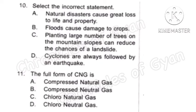Question 10: Select the incorrect statement. Option A — Natural disasters cause great loss to life and property — is correct, as earthquakes and cyclones cause damage to lives and property. Option B — Flood causes damage to crops — is also correct. Option C — Planting large numbers of trees on mountain slopes can reduce the chance of landslide — is also correct. Option D — Cyclones are always followed by earthquakes — is incorrect, as cyclones and earthquakes are different phenomena. So Option D is the correct answer.